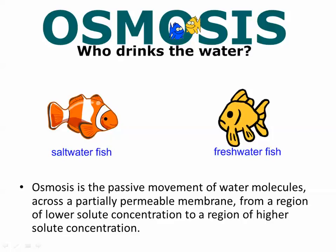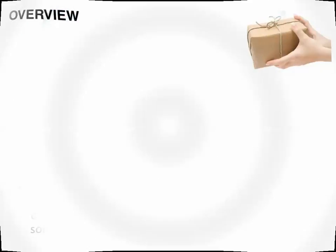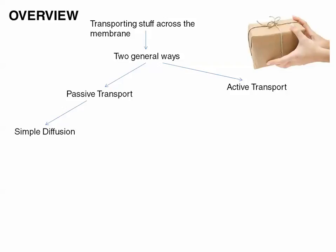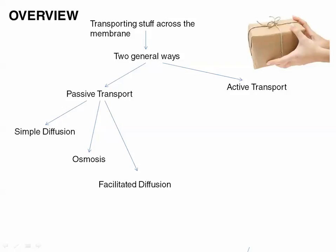Now let's look at other ways things can move in and out of a plasma membrane. We split transport into passive transport versus active transport — active sounds like it needs more energy, and it does. Passive transport is diffusion-related and happens naturally due to concentration gradients. It can be split into simple diffusion, osmosis, and facilitated diffusion. Active transport requires energy — for example, membrane pumps.